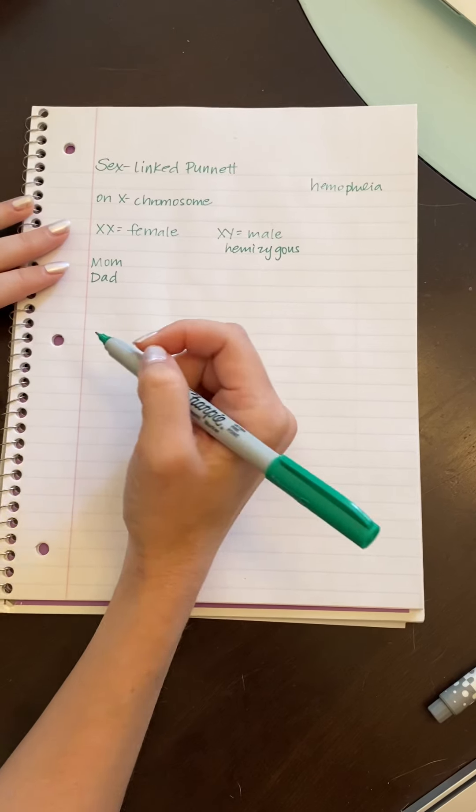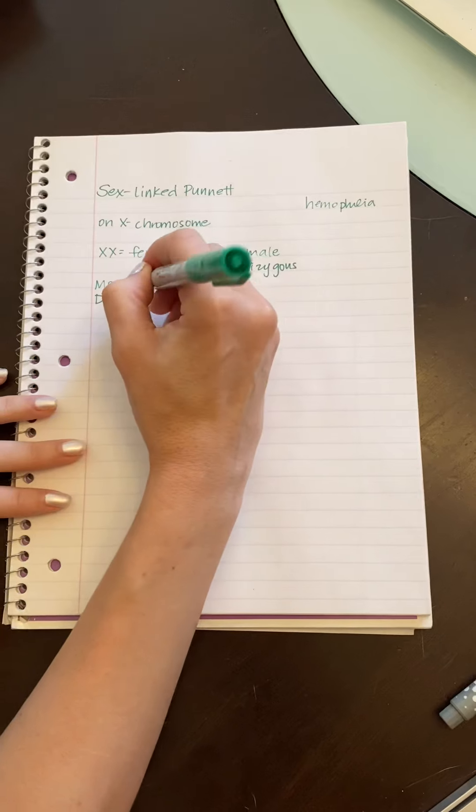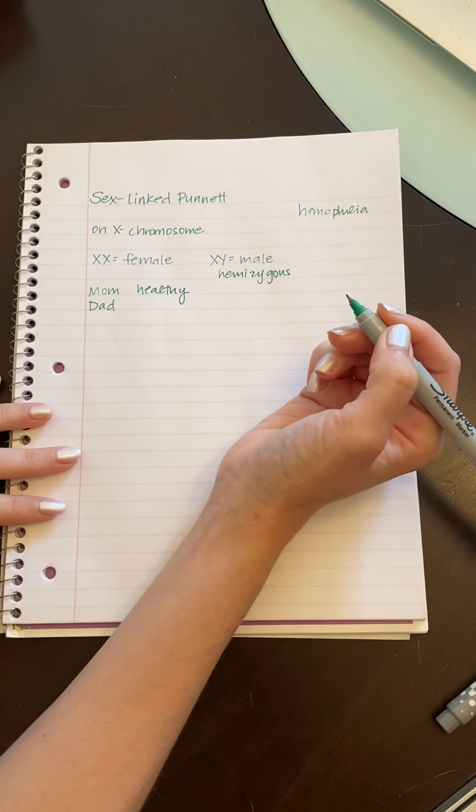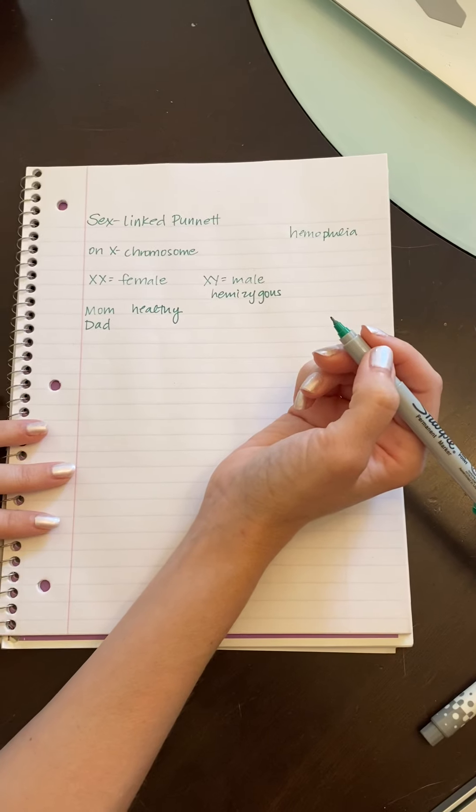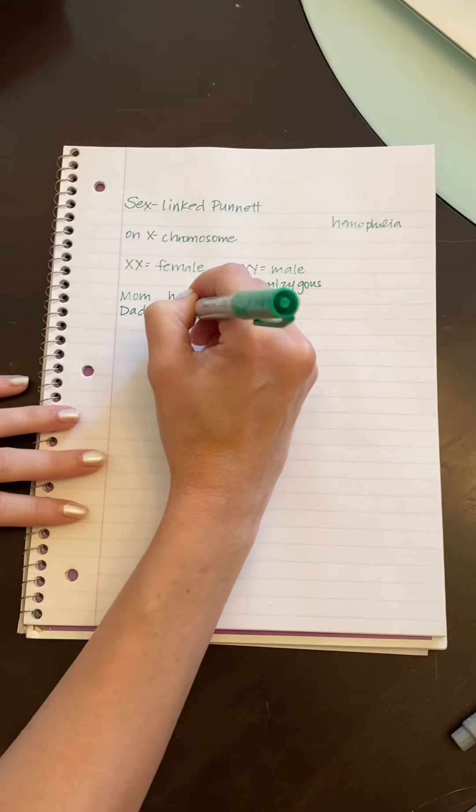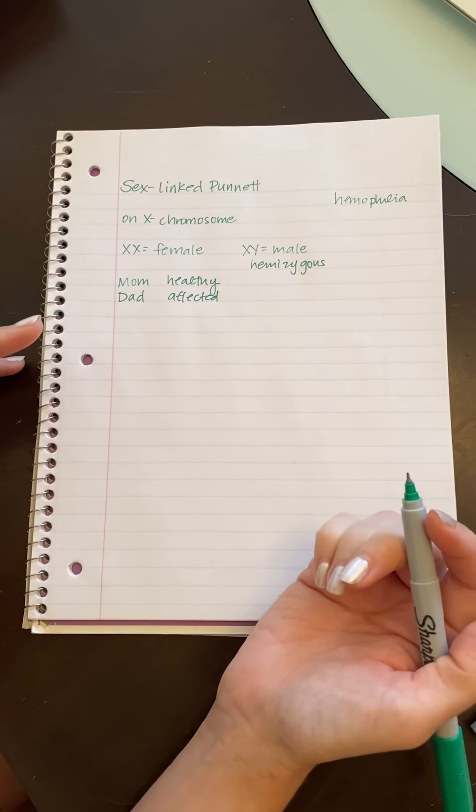So let's say we have a mom and a dad and we're going to start with our phenotype. So we're talking about hemophilia. Mom is healthy because women pretty much wouldn't survive something where you can't stop bleeding. Dad is affected. So he has the disease and they're worried about possibly passing this down to an offspring.